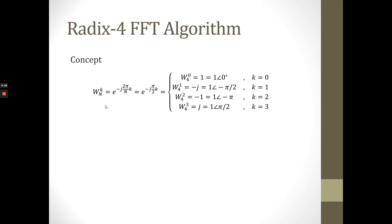Again, we have the WK function which is equal to an exponential function. For N equal to 4, we have exponent negative J pi over 2 times K. So we substitute K from 0 until 3. For H1 we have this value. When we apply this exponent function based on Euler's identity — cos(ωN) minus J sin(ωN) — and convert into magnitude and phase, we have the magnitude and phase values for K equal to 1, K equal to 2, and K equal to 3.